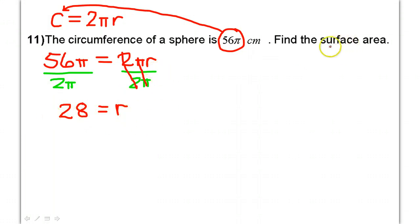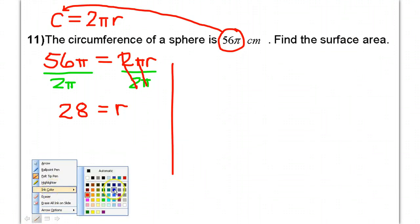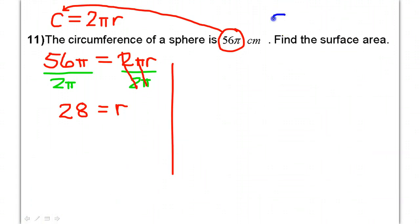Now, let's see. We're supposed to find the surface area, though. So, we need to take that radius and use it to find the surface area. Well, surface area formula is 4πr².